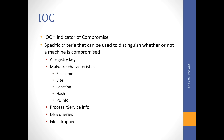IOC means Indicator of Compromise. You can think of them as small pieces of information that could be used to distinguish whether or not a machine is compromised — small criteria or pieces of information that indicate a system is actually compromised. That indicator could be a registry key, for example a specific registry key that is only added or modified by a malware.